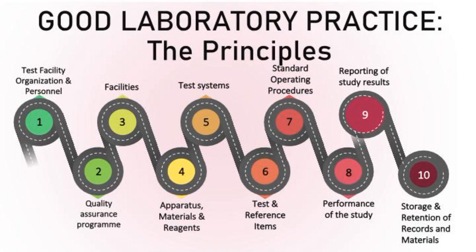Let's do a little revision here. As I had mentioned before, the GLP is composed of 10 main principles. The first principle, Test Facility Organization and Personnel, provides an outline regarding the management of the test facilities and the personnel involved. It discusses their job descriptions and the importance of training. The second principle, the Quality Assurance Program, describes the system that manages and ensures compliance towards the GLP. It describes the responsibilities of the Quality Assurance Personnel and all the documentations under his or her governance.